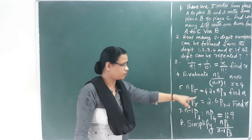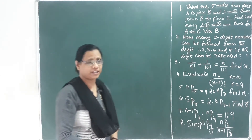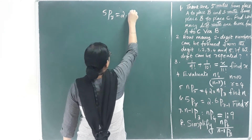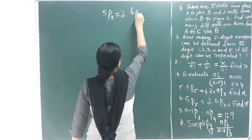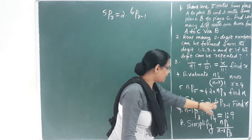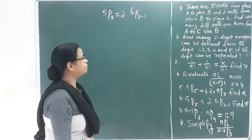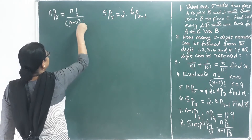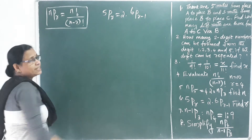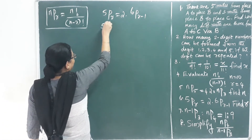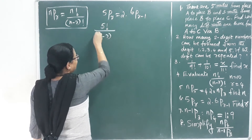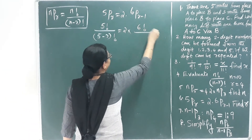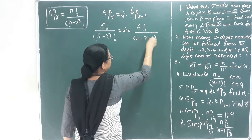Next question — the 5th question: find r, given that 5Pr = 2 × 6P(r−1). We use the NPR formula: NPR = n factorial divided by (n − r) factorial. So: 5 factorial divided by (5 − r) factorial = 2 × 6 factorial divided by (6 − r − 1) factorial.